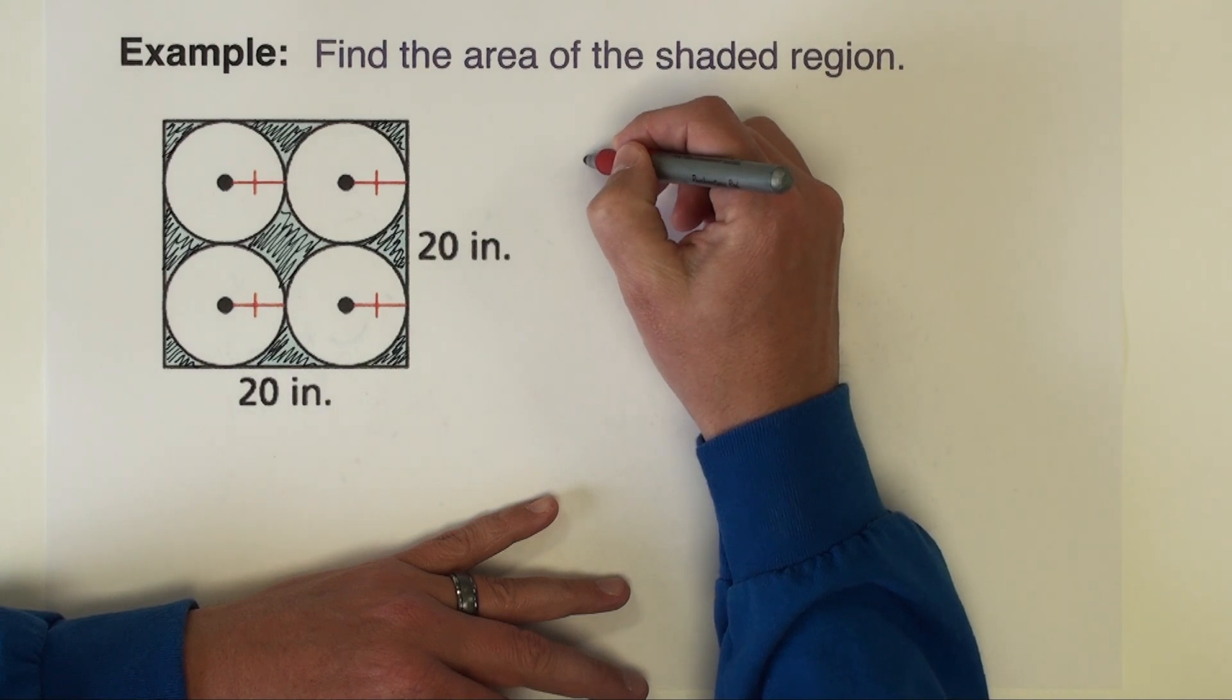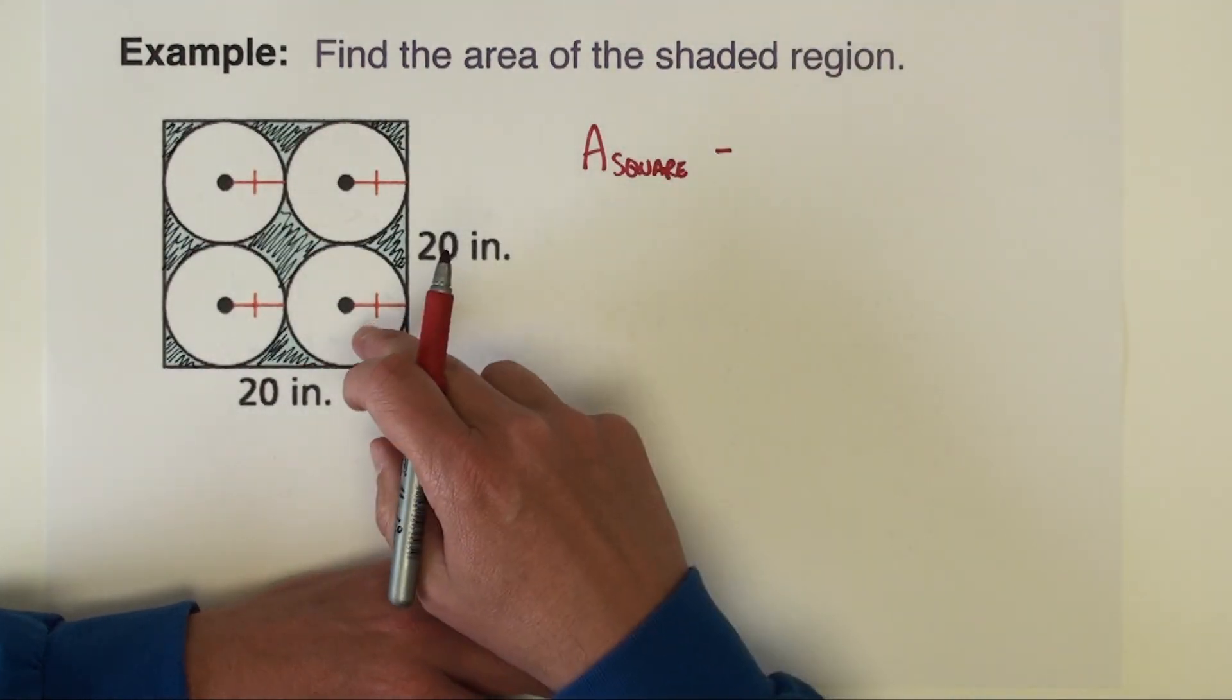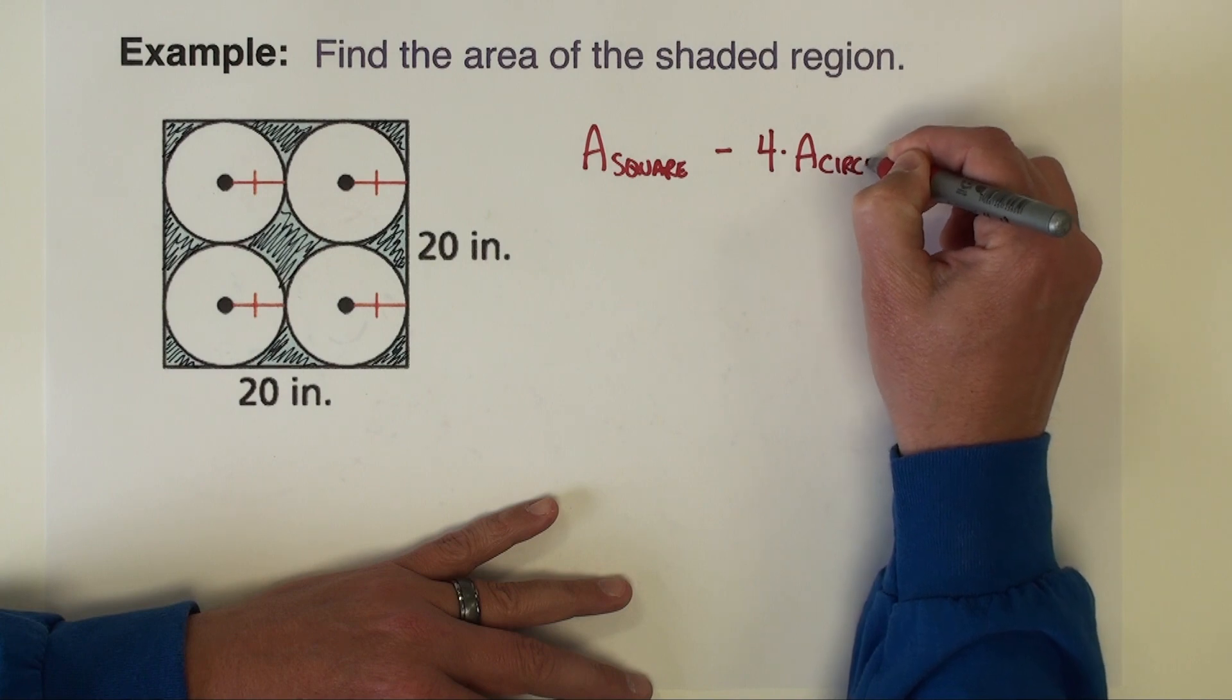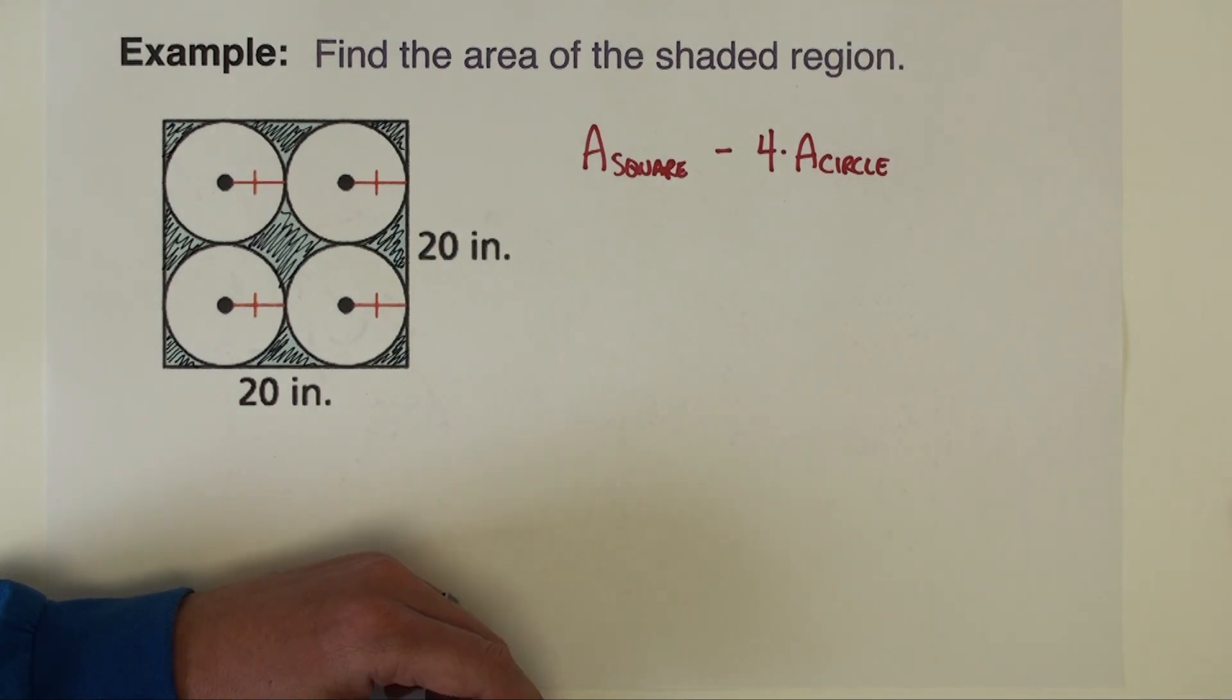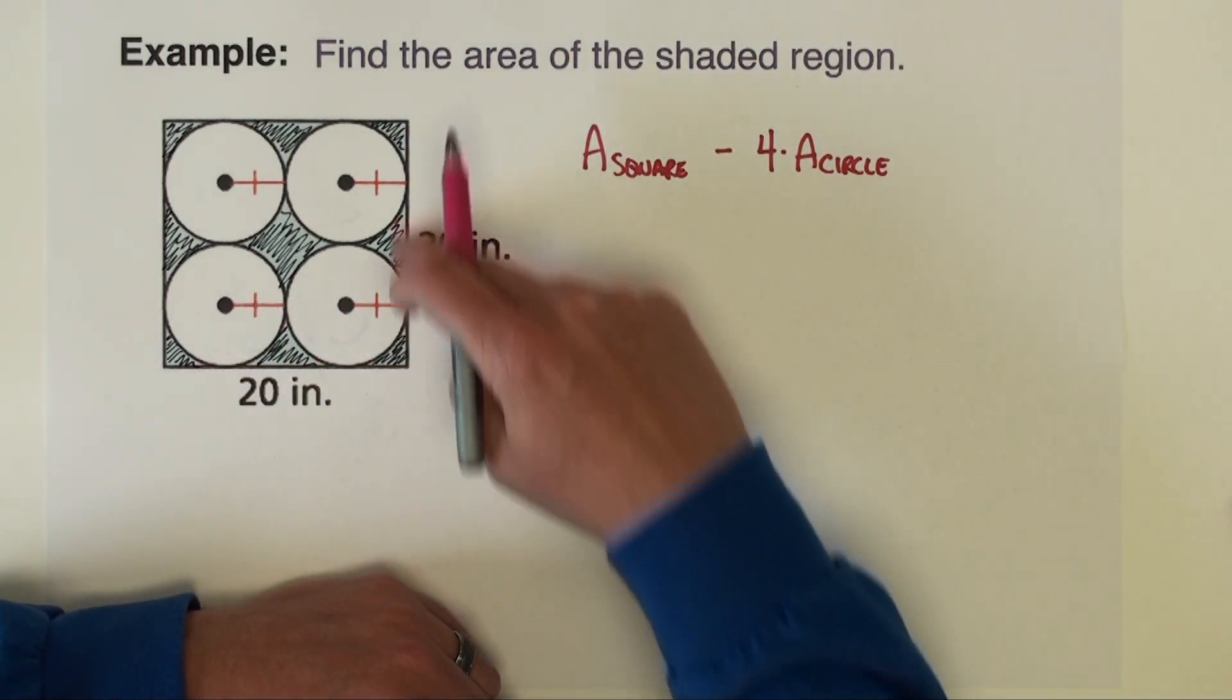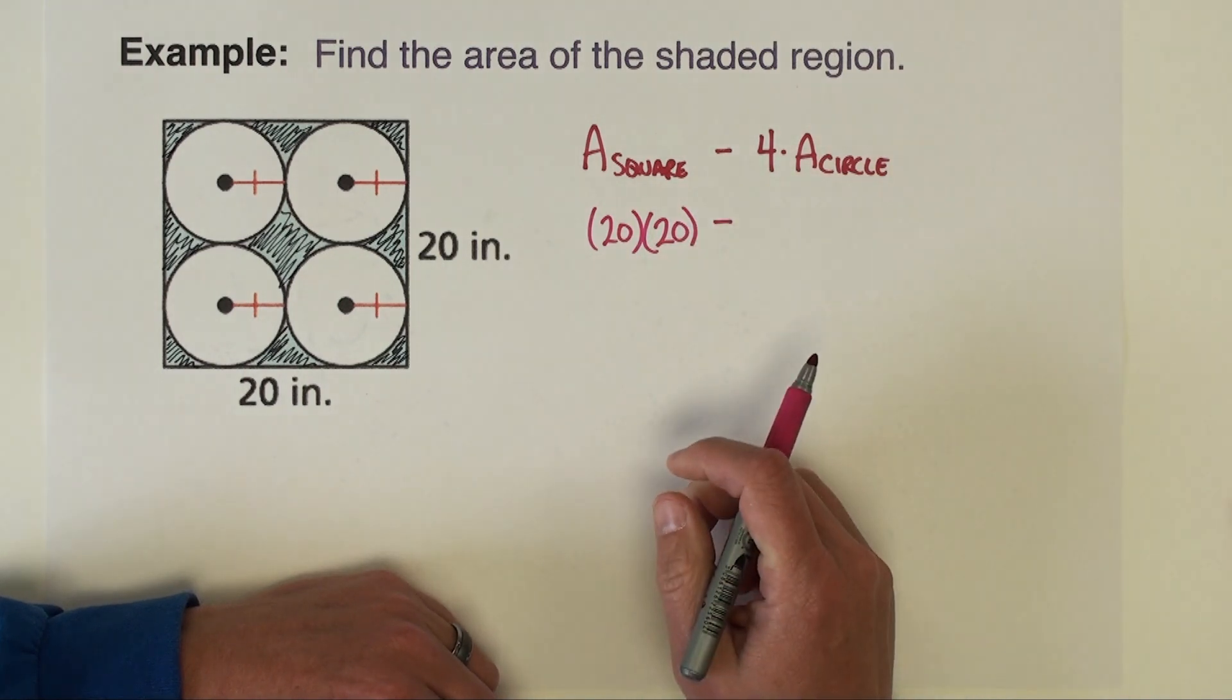So that's my strategy. I want to do the area of the square minus, now these circles are all the same. And notice that these circles are all congruent circles. So I can do four times the area of the circle. That's going to give me all four circles taken out at once. How do we do this? How do we find area of a square? So area of a square is just the length times width of the square, and that's going to be 20 and 20. So we need to do 20 times 20. That's our area of the square.